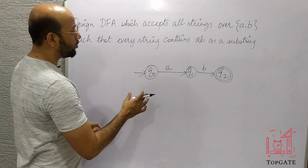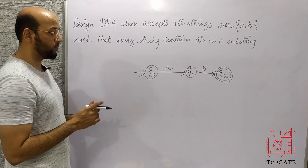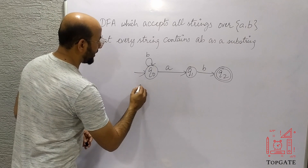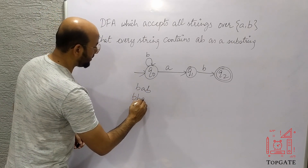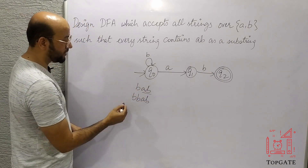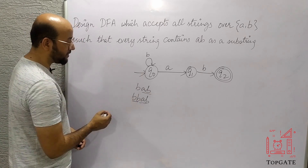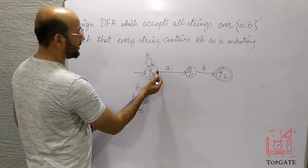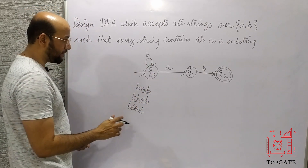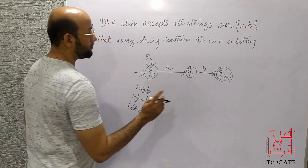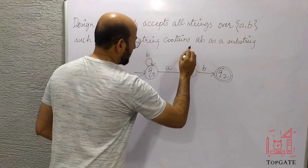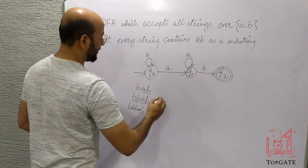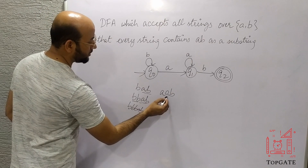Now we have to complete this DFA. All strings containing AB as a substring should be accepted. At q0, I'll take a self-loop for 'b' — meaning strings like BAB, BBAB, or BBBAB should be accepted because there is AB in the string. At q1, one path for 'b' is already done, so I'll take a self-loop on 'a'. This way strings like AAB or AAAB are also accepted because AB is present.